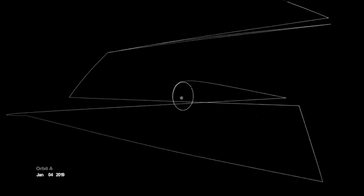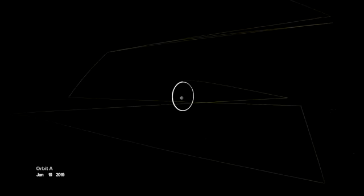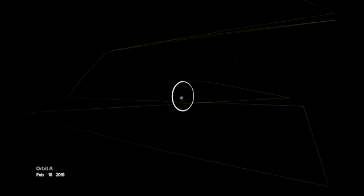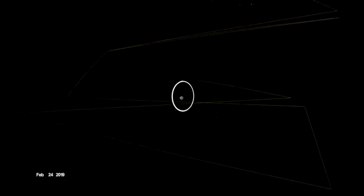On New Year's Eve, OSIRIS-REx was captured into orbit by Bennu's minuscule gravity, making it the smallest world ever to be orbited by a spacecraft.